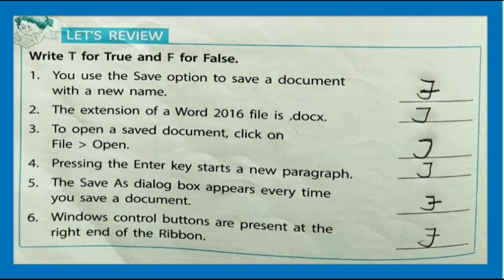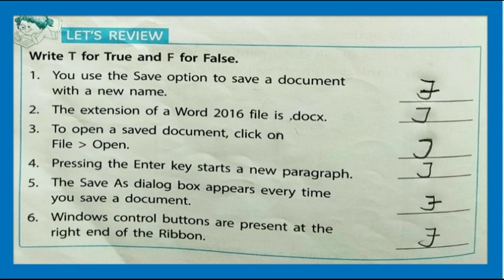True or False exercise. You use the Save option to save a document with a new name — False. The extension of a Word 2016 file is .docx — True. To open a saved document, click on File, then Open — True. Pressing the Enter key starts a new paragraph — True. The Save As dialog box appears every time you save a document — False. Windows control buttons are present at the right end of the Ribbon — False.